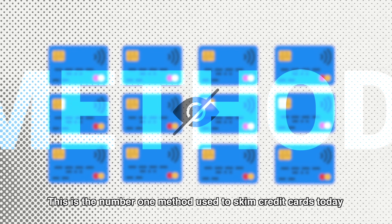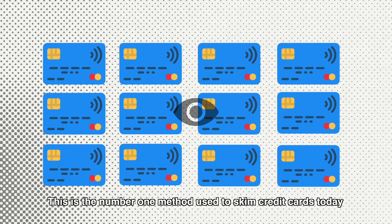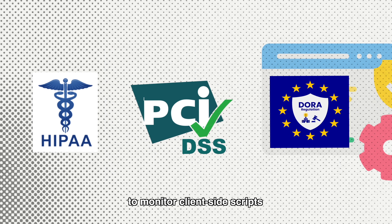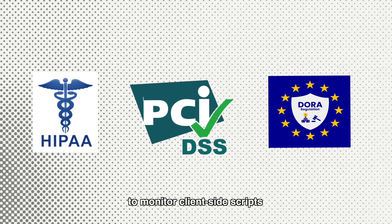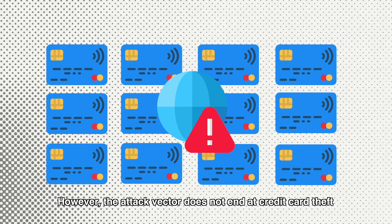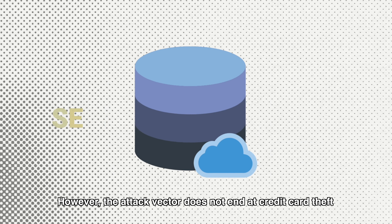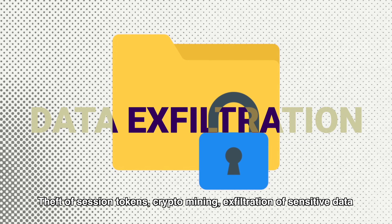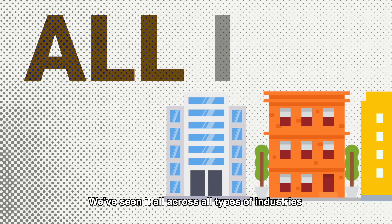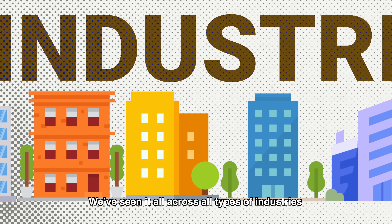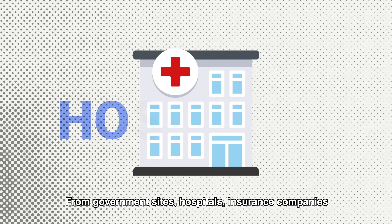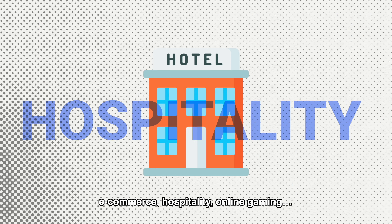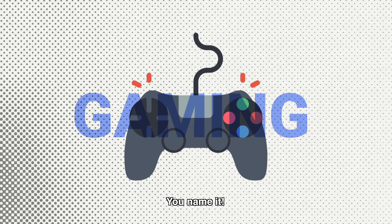This is the number one method used to skim credit cards today — so much so that it became a compliance requirement to monitor client-side scripts. However, the attack surface does not end at credit card theft. Theft of session tokens, crypto mining, exfiltration of sensitive data — we've seen it all across all types of industries, from government sites, hospitals, insurance companies, e-commerce, hospitality, to online gaming.